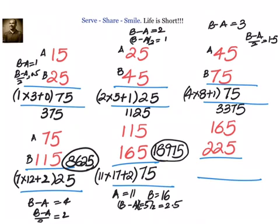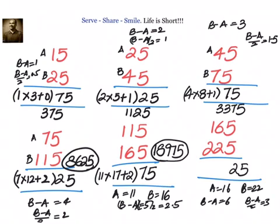We have 165 into 225. Here a equals 16, b equals 22. B minus A equals 6, and b minus a by 2 equals 3. Since b minus a is even, the right-hand side is 25. Left-hand side: 16 into 23 equals 368, plus integer part 3 equals 371. The answer is 37125. You can check them all.